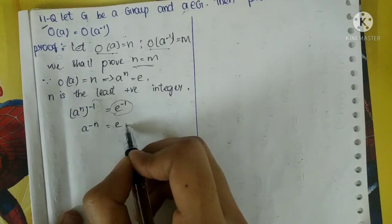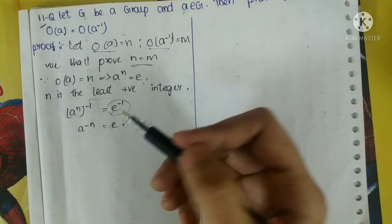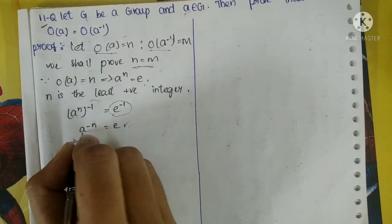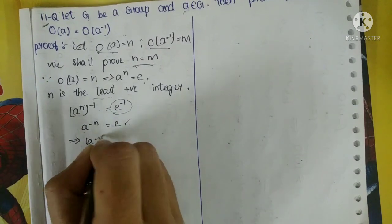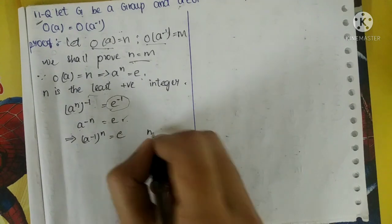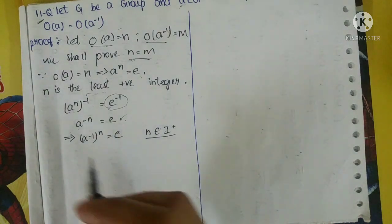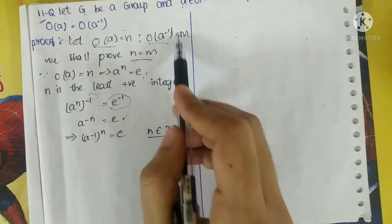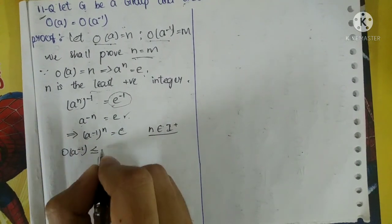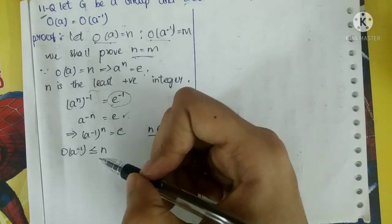So A^(-N) = E. Here E⁻¹ equals E based on the Abelian group identity — E inverse is identity E itself. So we substitute: A^(-1) whole power N equals E. This means O(A⁻¹) is less than or equal to N, because N is the least positive integer.